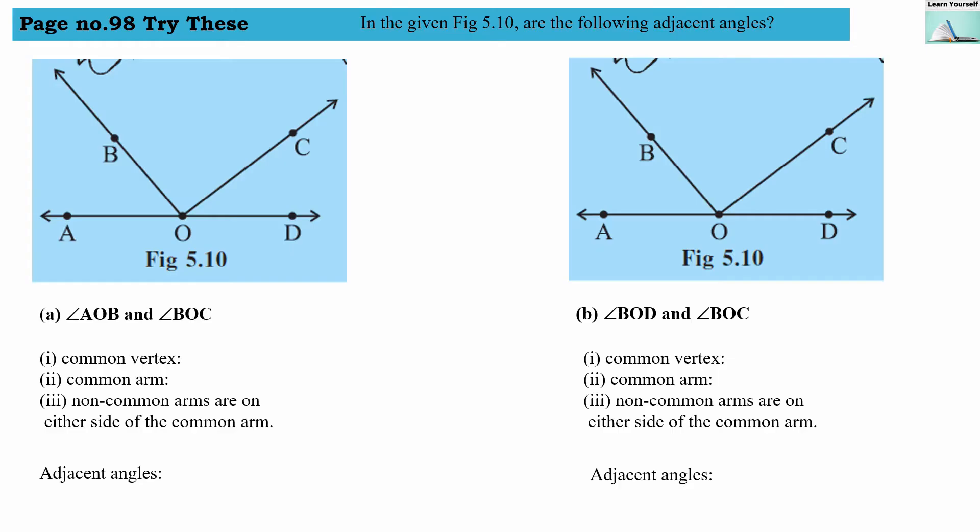Welcome to Learn Yourself. Page number 98, Try These: In given Figure 5.10, are the following angles adjacent angles or not? We have to find out. For example, angles A and B - we have to check whether they are adjacent angles or not. For that, we will check all three conditions. If all three conditions are fulfilled by these two angles, then they are adjacent angles. Let us start with the first example.